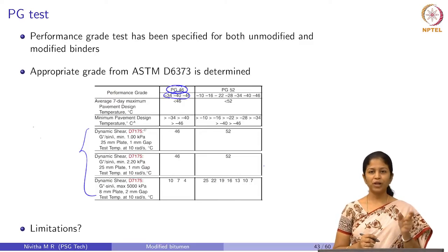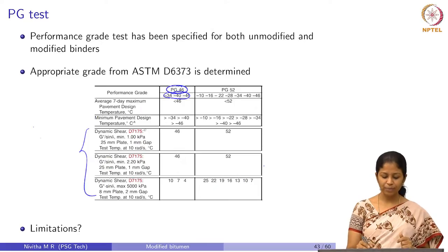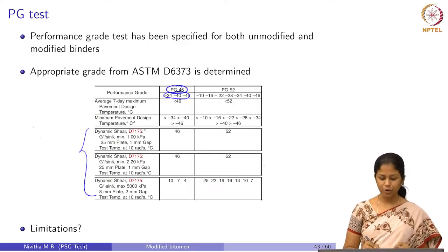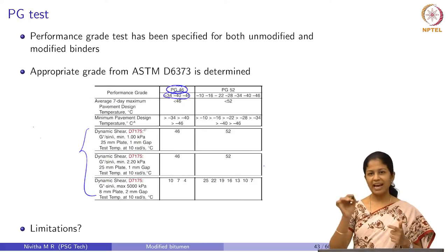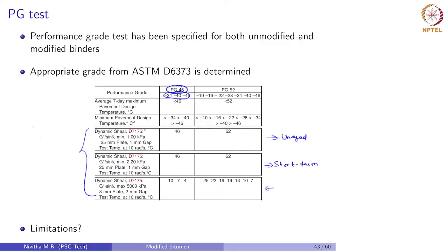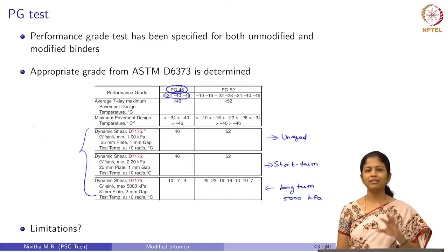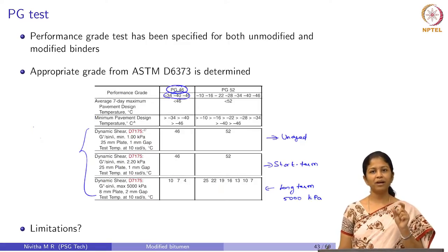The performance grade test is based on ASTM D6373 specifications. We have a PG grade specified in terms of its high temperature grade and low temperature grade. There are at least three tests that need to be done. One is a dynamic shear where we measure G* / sin δ — it has to be a minimum of 1 kPa at the test temperature on unaged material. On short-term aged material, G* / sin δ must be a minimum of 2.2 kPa, and on long-term aged materials, G* × sin δ must be a maximum of 5000 kPa. We perform the same test procedures and evaluate the performance grade of a modified bitumen.